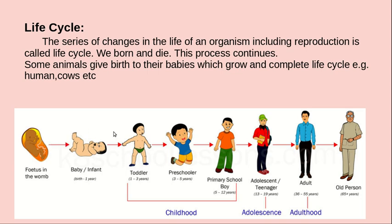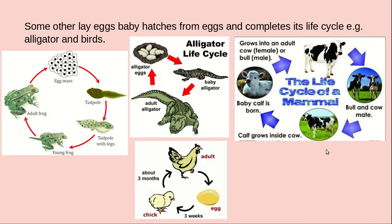Human beings are born, grow through life stages, and die. Then new ones are born again. Some animals lay eggs and babies hatch from these eggs to complete their life cycle. Some animals have children that complete their life cycle. For example, an adult frog lays eggs.